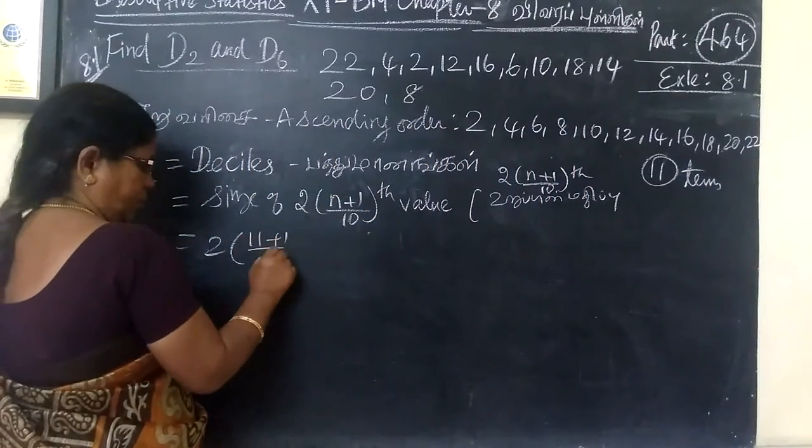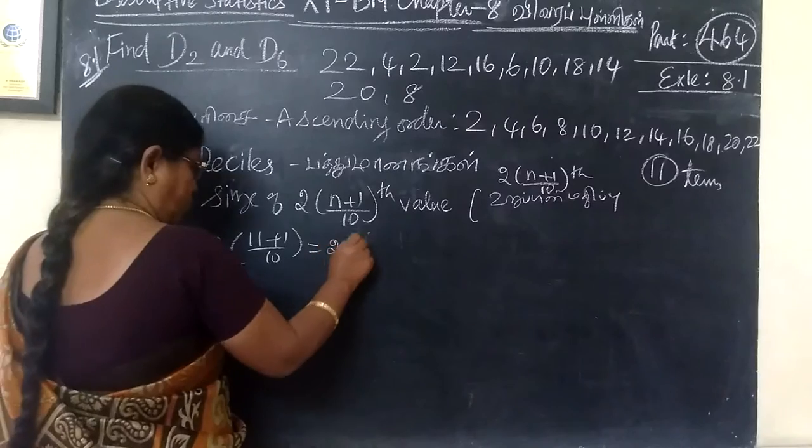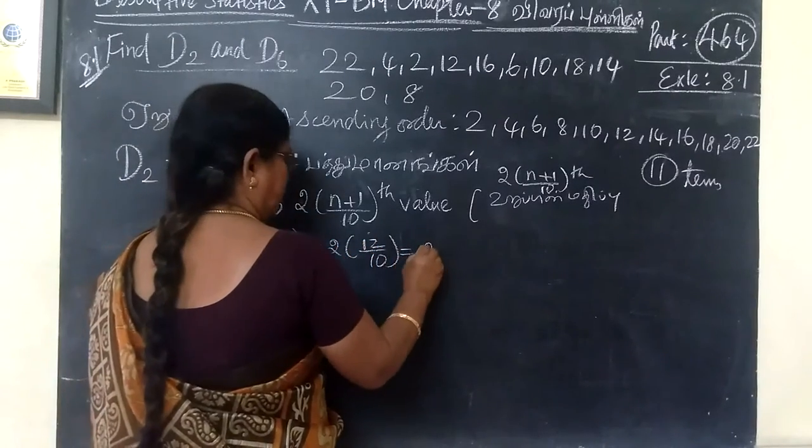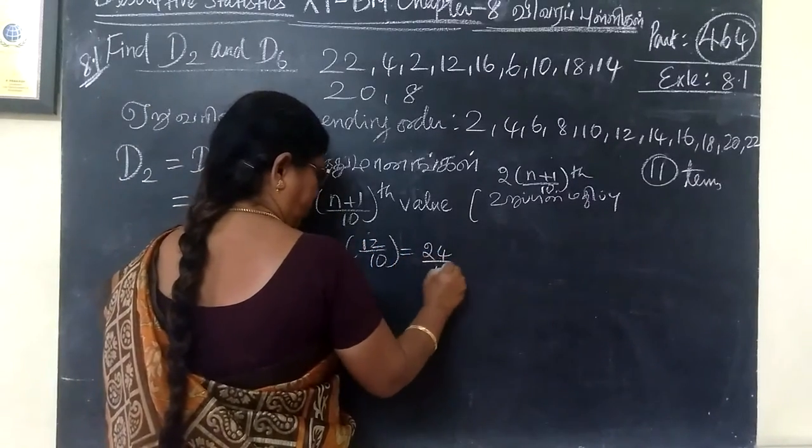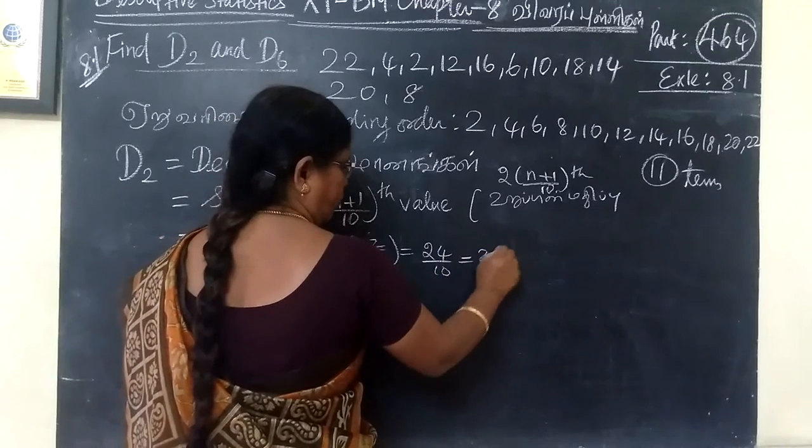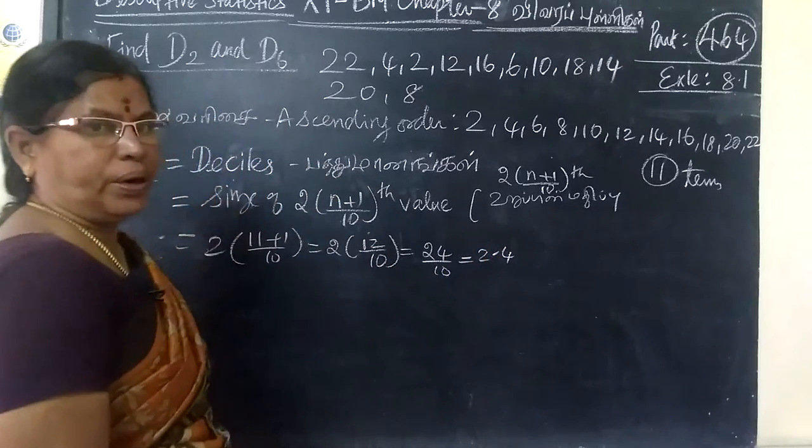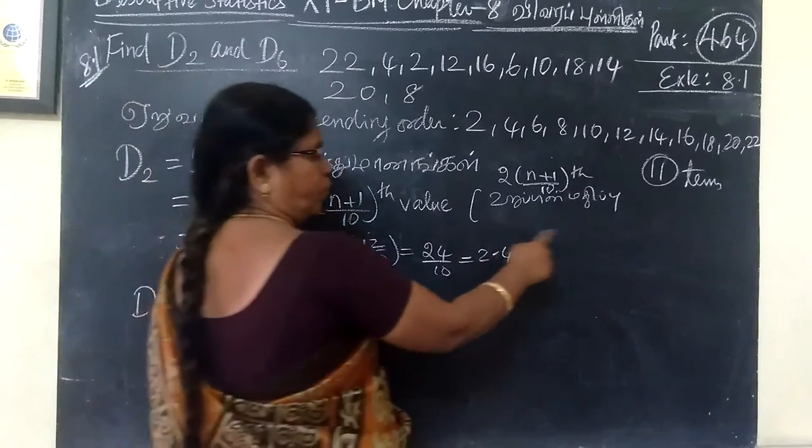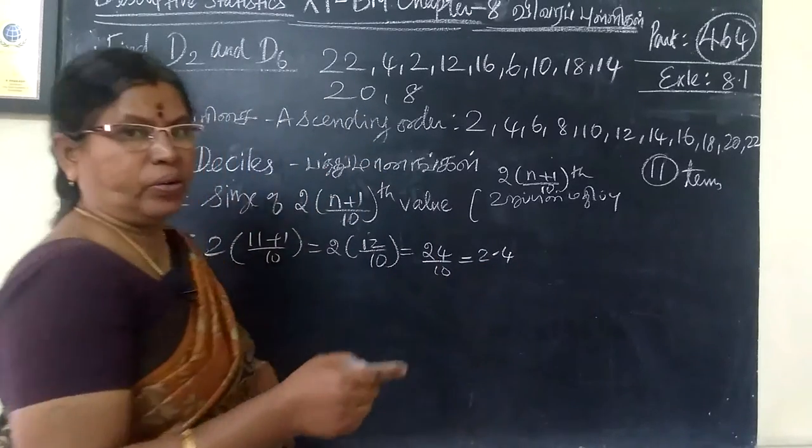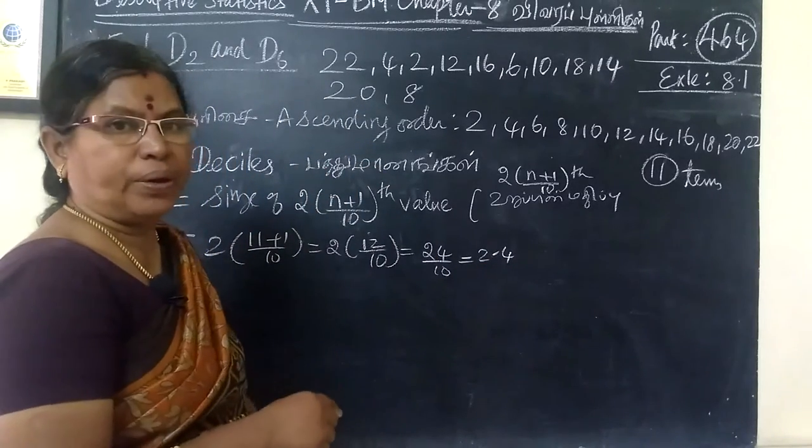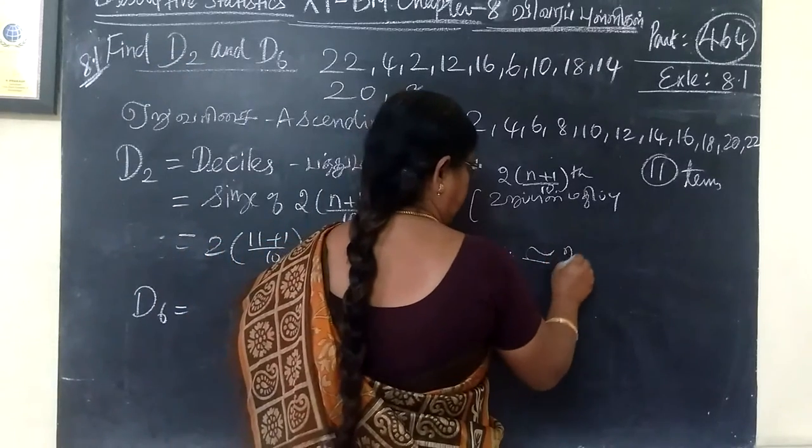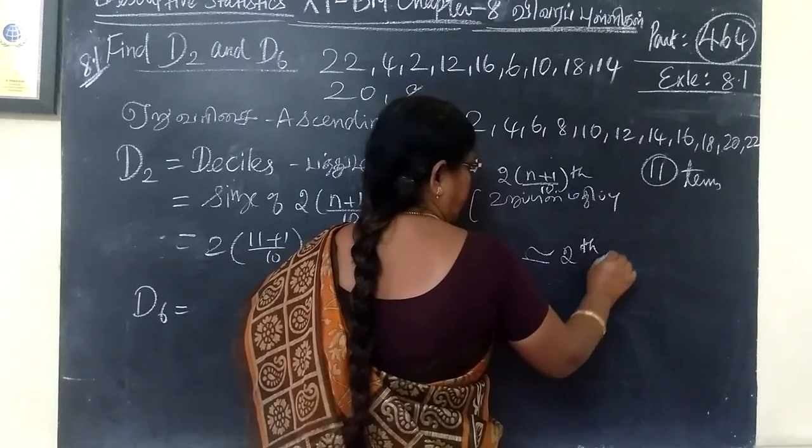So, 11 plus 1 by 10th, 2 in brackets. Here, 12 by 10. So here, 24 by 10, which is 2.4. Approximately 0.5 and more, we consider the next whole number. 0.4, you are considering only 2. So this is approximately equal to 2nd term.